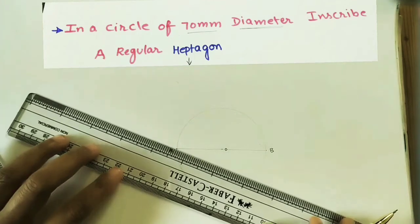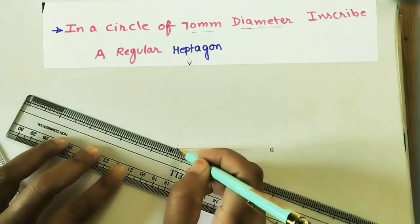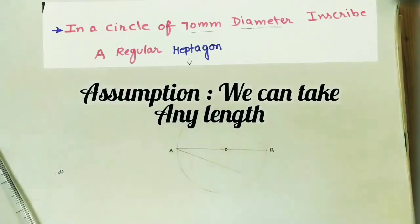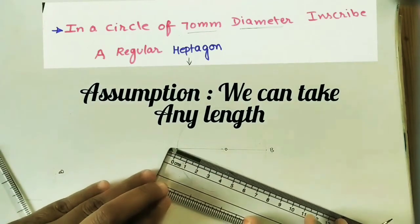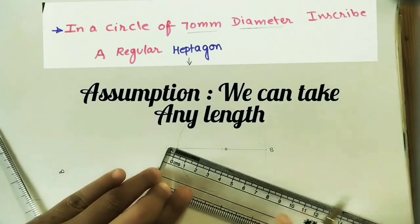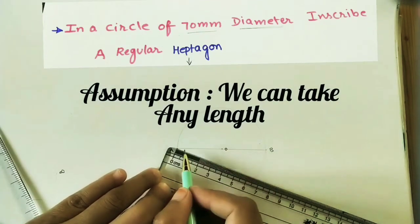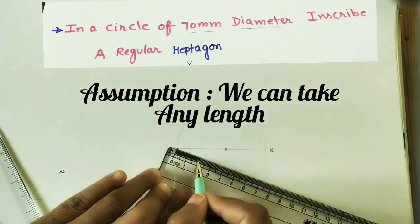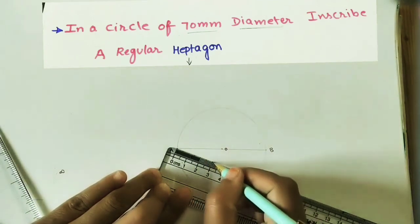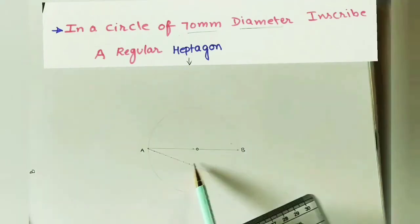This is the process of making equal divisions. Draw one inclined line at any angle, and divide this line into seven divisions. We can take any length, one centimeter or half centimeter. Here I am taking half centimeter, seven divisions. Using a compass we can do this. Join the last point to B.